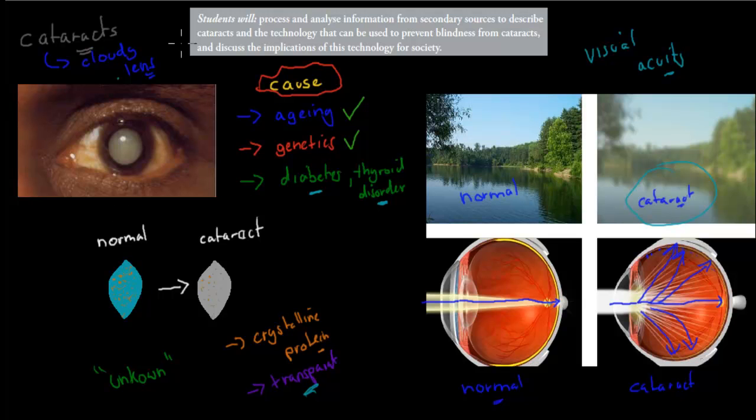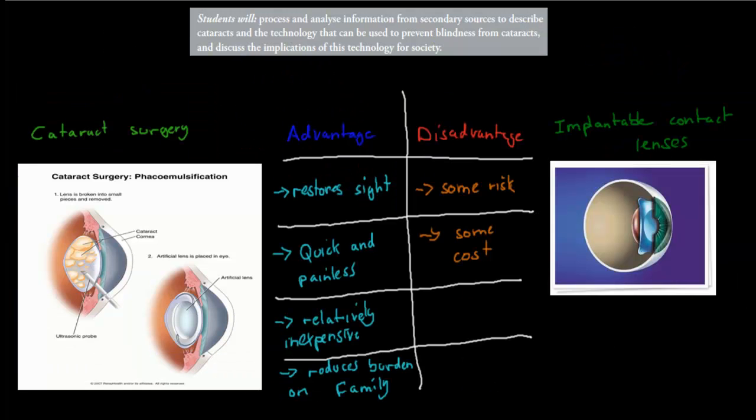That's what you should know in terms of actual cataracts. The first part, because the dot point says process and analyze information from secondary sources to describe cataracts. That's what we've done, we've described the cataracts. But now we're going to describe the technology that can be used to prevent blindness from cataracts, and discuss the implications of this technology for society. Now there's two different technologies that are being used. One of them is cataract surgery. This is probably one of the most common surgeries in the world. Cataract surgery is quite common, it's happening a lot.